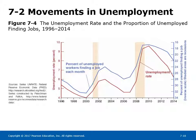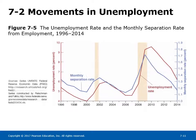Figure 7-4 shows the unemployment rate and the proportion of unemployed workers finding jobs from 1996 to 2014. You can see how fluctuations in the aggregate unemployment rate affect individual workers. When the unemployment rate is high, the percentage of unemployed workers finding a job each month falls. Note that the scale on the right is an inverse scale. Figure 7-5 shows the unemployment rate and the monthly separation rate from employment 1996-2014. When unemployment is higher, a higher proportion of workers lose their jobs.